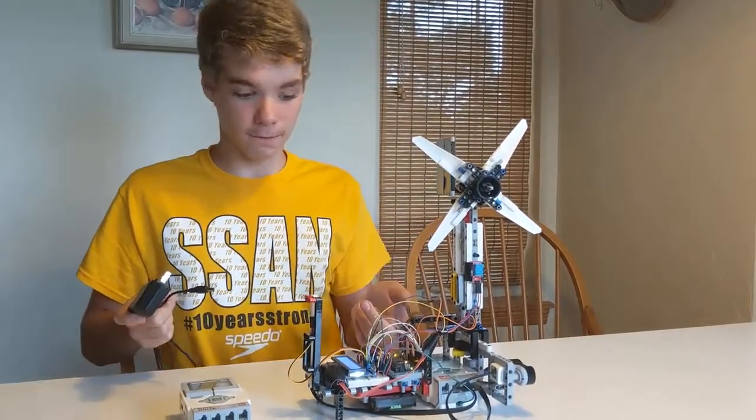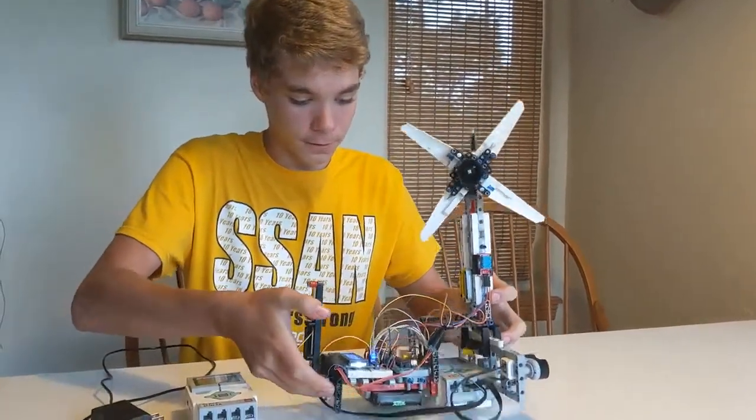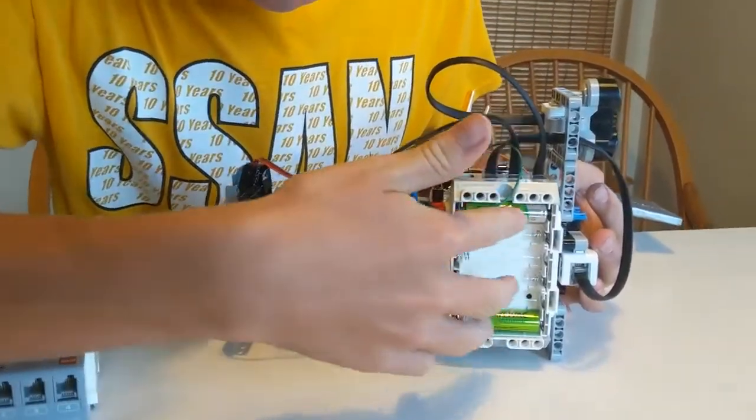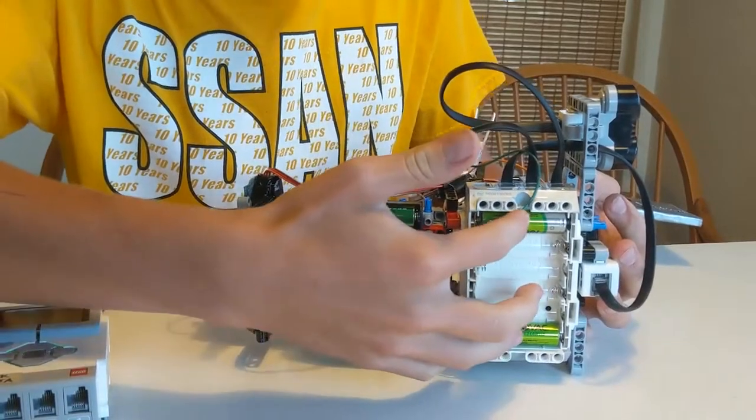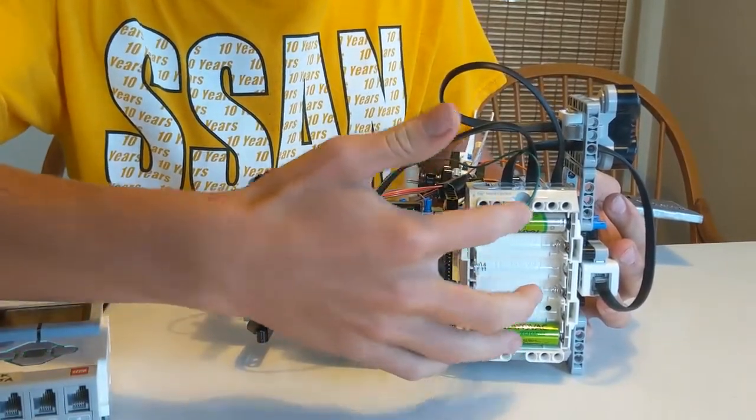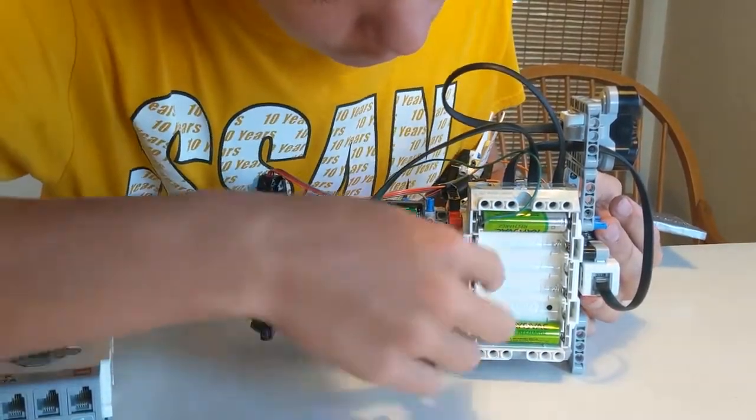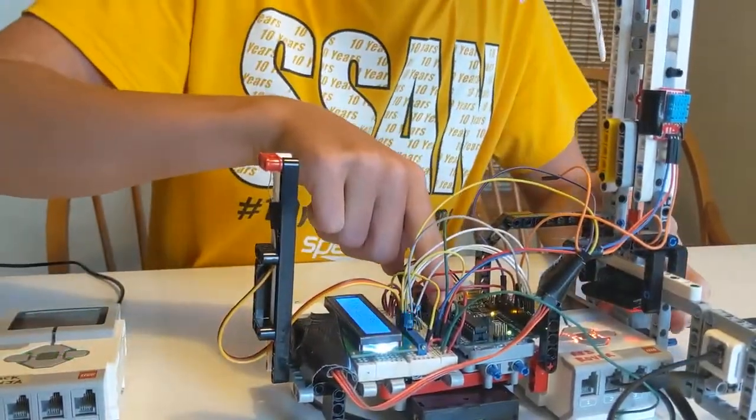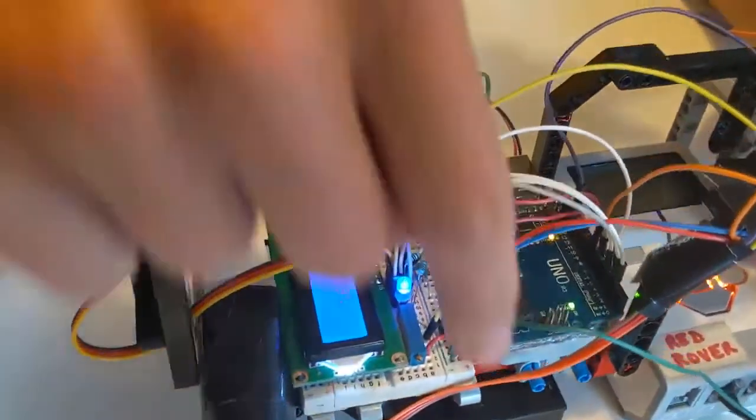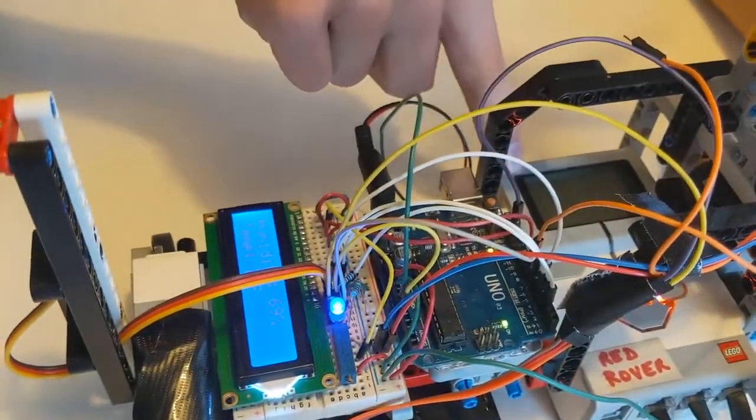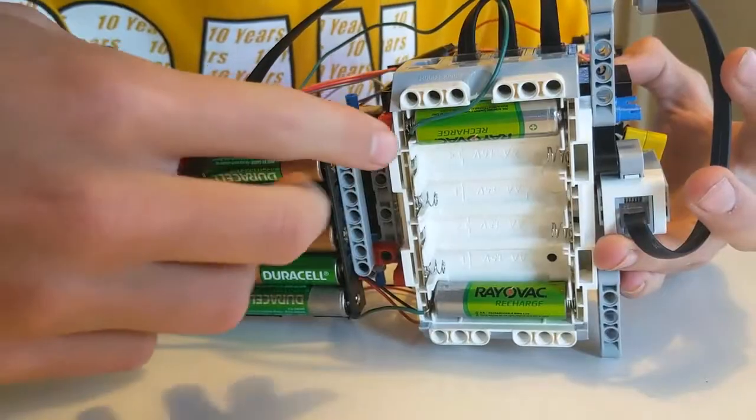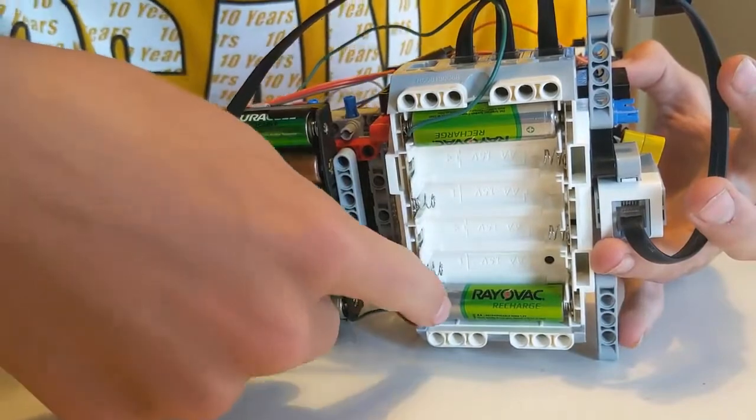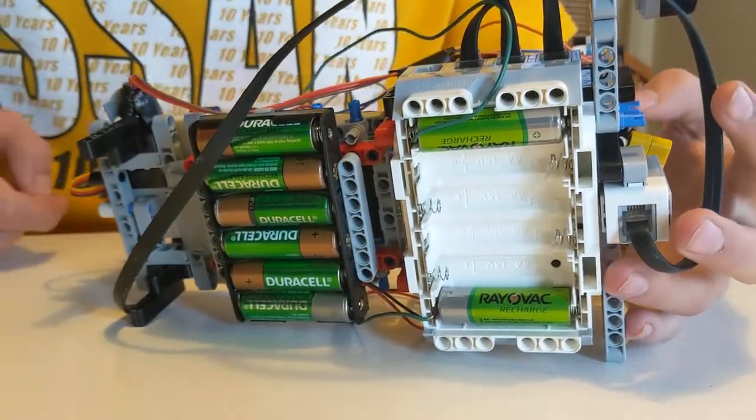Now, to run the EV3 off of wall power, you have to open up the battery bay and take all the batteries out except two. They don't have to be full; they can be dead. Just take two wires from the Arduino's VIN pin and ground into the two sides of the battery bay. The side that is closer to the sensor ports is negative, and the one that is closer to the motor ports is positive.